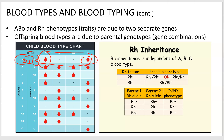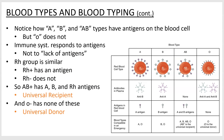The Rh factor works similarly. The Rh gene has a dominant allele — if you have it, you'll express that phenotype and have the Rh antigen on your blood cells. So let's look at how the immune system responds to these blood type antigens.